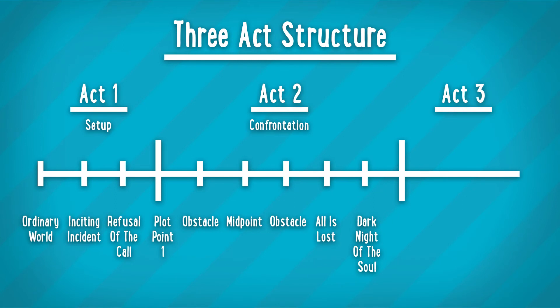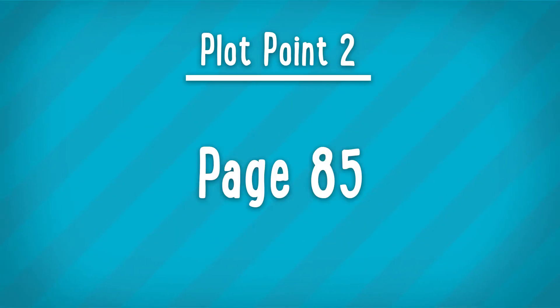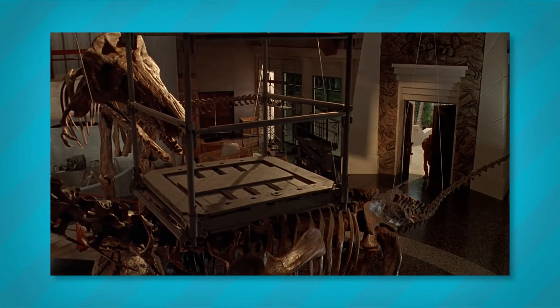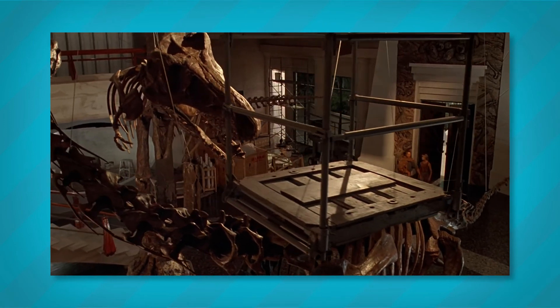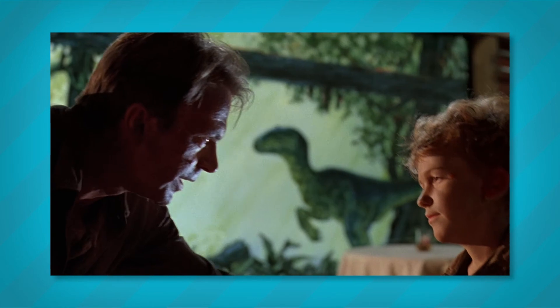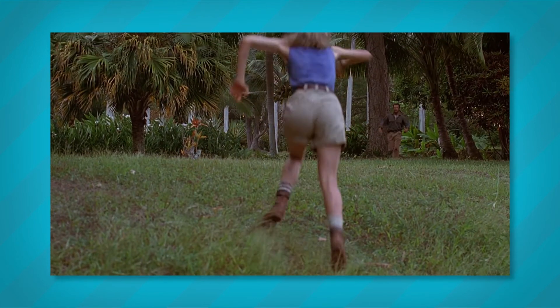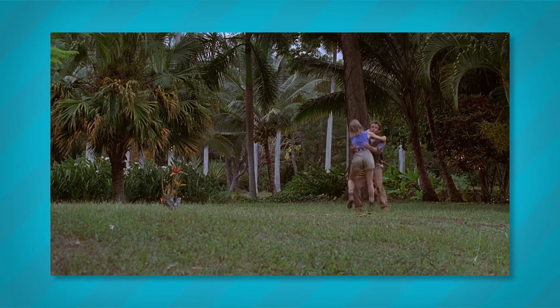And finally, to close out Act 2, we have what Field calls Plot Point 2, or what Snyder calls breaking into three — it usually falls at around page 85. This is the moment your protagonist comes up with their big idea to defeat the bad guy. It's also a moment where the hero realizes how to accomplish their physical need and their emotional need at the same time. If the midpoint twist was bad for the hero, then this story beat has a false sense of success. In Jurassic Park, Dr. Grant arrives at the visitor center with the kids and has a touching moment with Tim before going off to gather the others. He is then reunited with Dr. Sattler and for the moment it seems everyone he cares about is safe.